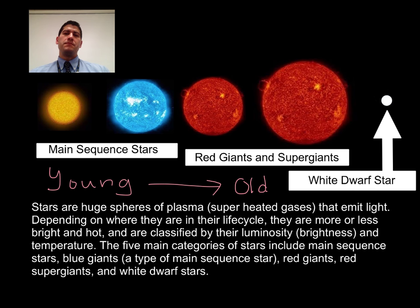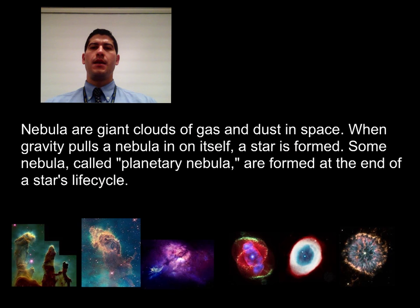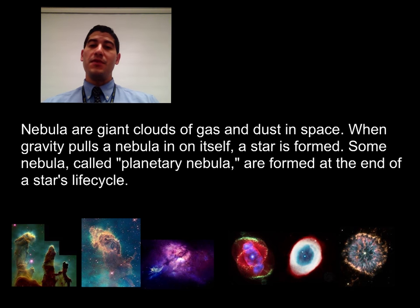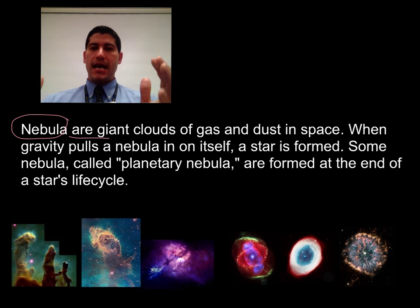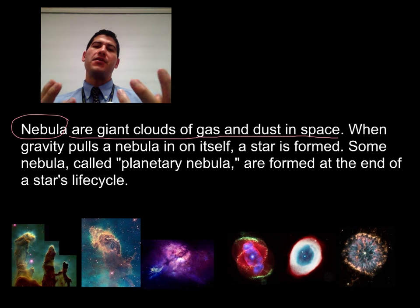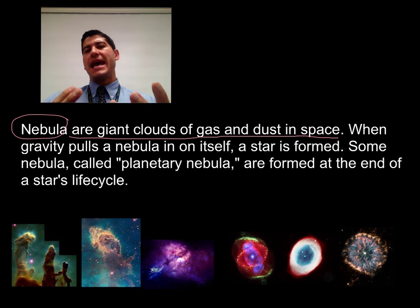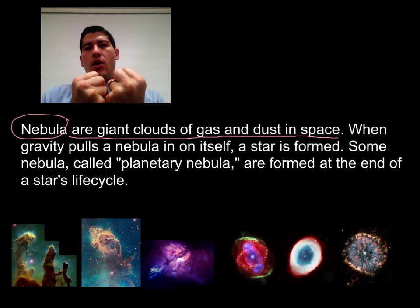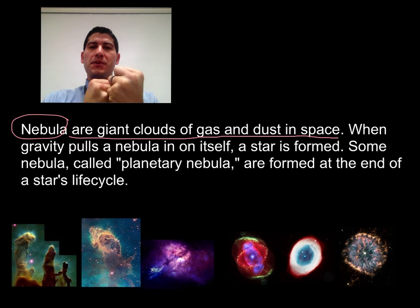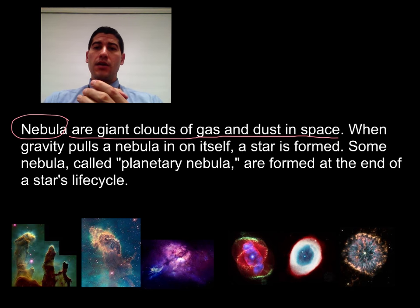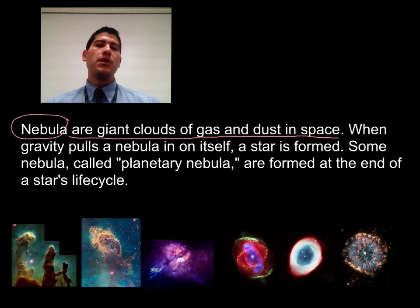So, where do stars come from? Let's take a look at our next component of the universe: nebula. Nebula are the birthplace of the stars, and as you can see from the images, they're really beautiful. They are huge clouds of gas, mostly hydrogen and dust, that have been pulled together by gravity. When gravity pulls this gas in really close, all those atoms, hydrogen and dust particles begin to bump into each other, which produces heat. As the nebula gets smaller and more and more dense, it gets hotter until it spontaneously ignites into a luminous star.